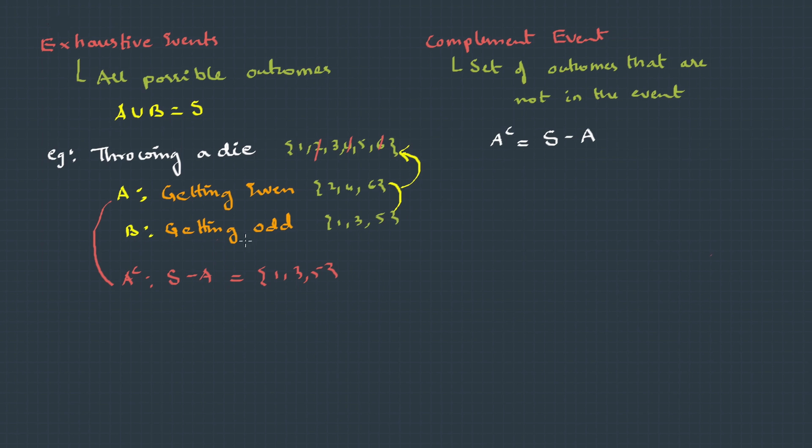Similarly for B, the complement will be 2, 4 and 6. And one more important point to note, events are basically sets. So all the rules which can be applied to sets can be applied to the events and the probability, which we'll be seeing a little more in depth in the upcoming videos.